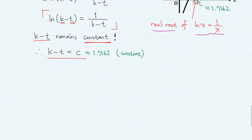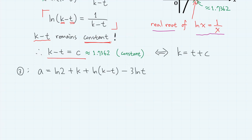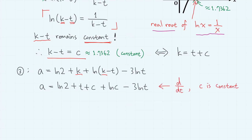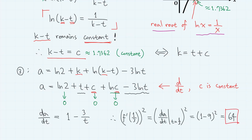Therefore, we write k minus t equals some constant c, equivalently k equals t plus c. Substituting into Equation 3: a equals ln 2 plus (t plus c) plus ln c minus 3 ln t. Differentiating with respect to t, all terms involving only c give zero. So dA/dt equals 1 minus 3 over t — the same derivative as before, giving the same answer.